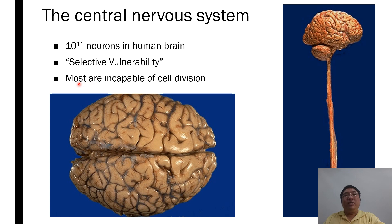Each part of the brain tends to be affected by particular diseases. Some diseases prefer to affect some parts of the brain in particular, and the types of cells are also important. For example, neurons tend to be injured much easier than other glial cells. The central nervous system is known for its incapability to undergo cell division. Brain tissue is a good example of permanent tissue. Neurons are permanent cells — in adults, neurons are not dividing. They have already exited the cell cycle.